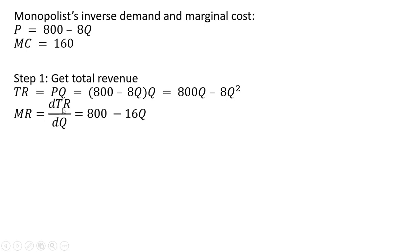To get marginal revenue, we take the derivative of total revenue with respect to quantity. The derivative of 800q is 800. The derivative of minus 8q squared — we bring down the 2, so 2 times 8 gives us 16 — and we subtract 1 from the exponent, leaving q to the power of 1. The marginal revenue is like the inverse demand but with a slope twice as steep: 800 minus 16q.